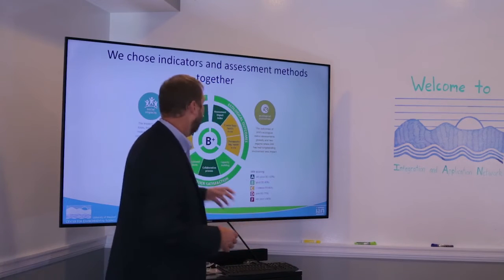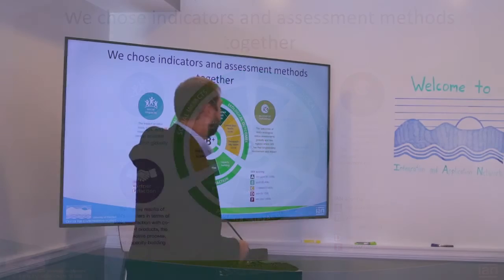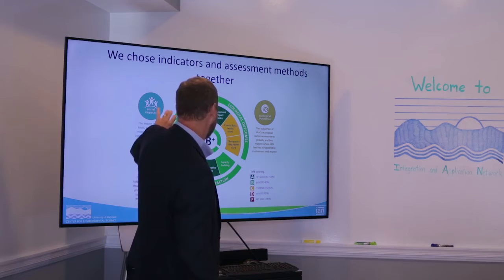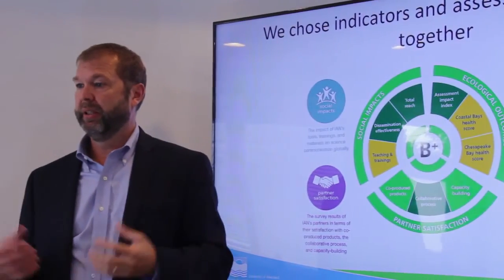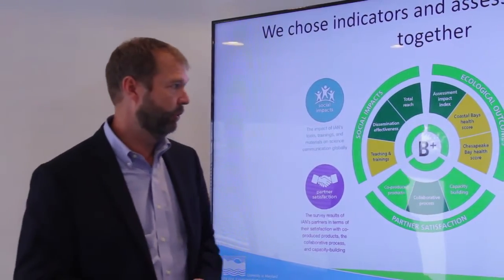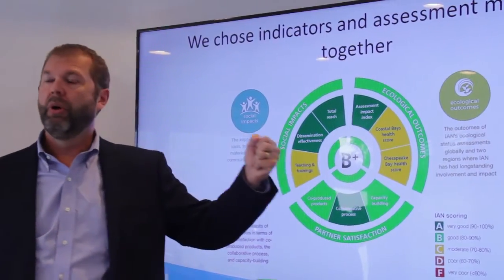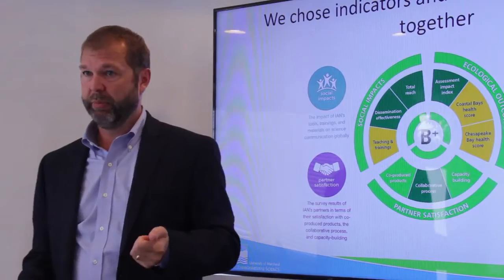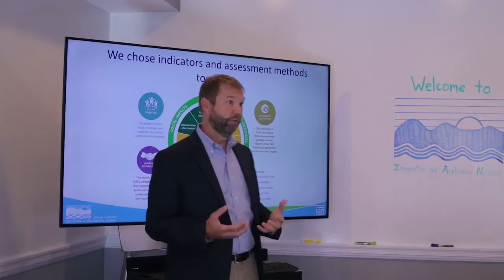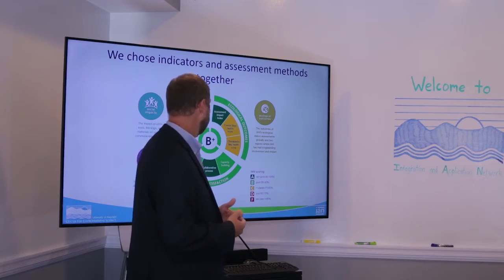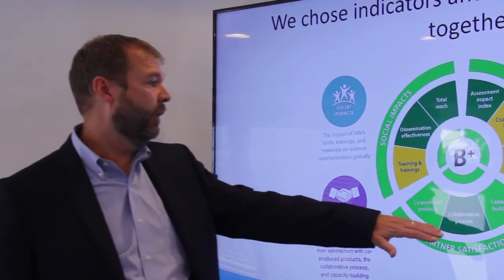For each of these areas, we have specific things we're measuring. In societal impacts: how many teachings and trainings have we conducted, how are we doing in disseminating the products and outcomes we've generated, and how many people are we reaching? For ecological outcomes, we have an assessment impact index, and we're tied to two places in Maryland — the Chesapeake Bay and Maryland's coastal bays — where we have a specific mission to improve conditions. We take those ecosystem health scores as part of our own.